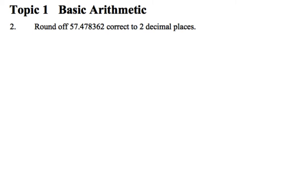So if we're rounding that off to two decimal places, 57.478362, we'll be chopping that there. I'll just write it out again so it's a bit bigger, 57.478362. We'll be chopping here so that it's got two decimal places in our answer.